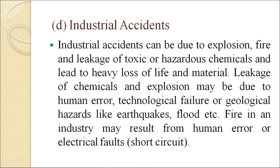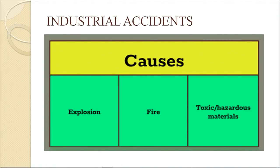As mentioned earlier about the Bhopal gas tragedy, that was also an industrial accident. Industrial accidents can be due to explosion, fire, and leakage of toxic or hazardous chemicals, leading to heavy loss of life and material. Leakage of chemicals and explosions may be due to human error, technological failure, or geological hazards such as earthquakes and floods. Fire in an industry may result from human error or electrical fault.